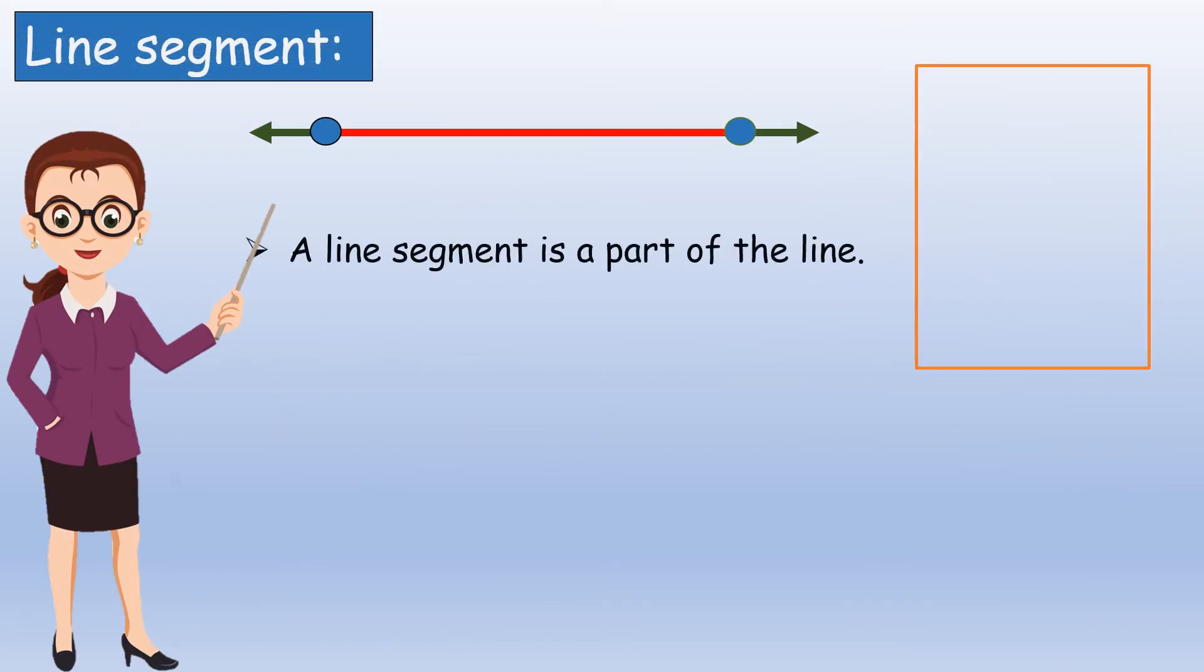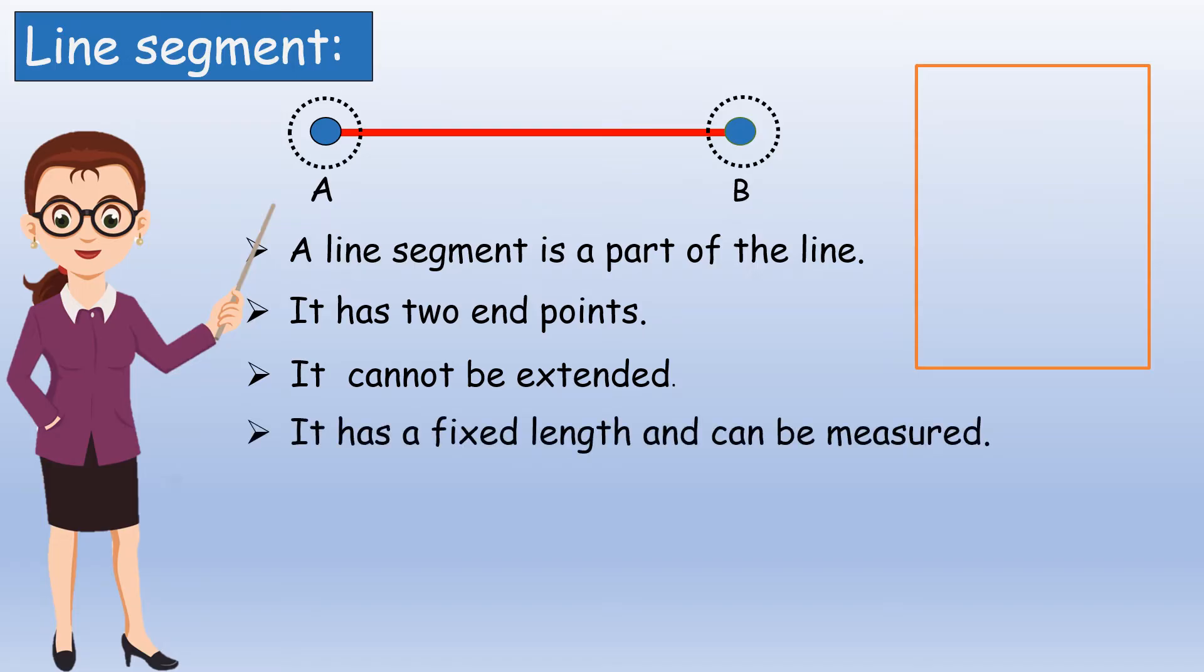Line segment. A line segment is a part of the line. It has two end points. It cannot be extended. It has a fixed length and can be measured.